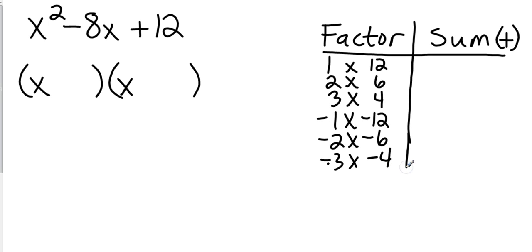So let's go over here and do the sums of these. Let me extend this just a little bit. 1 plus 12 is 13. 2 plus 6 is 8. 3 plus 4 is 7. Negative 1 plus negative 12 is negative 13. Negative 2 plus negative 6 is negative 8. And negative 3 plus negative 4 is negative 7. Now, obviously, the number we're looking for is negative 8.